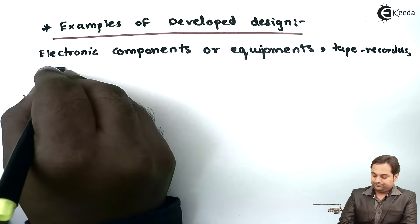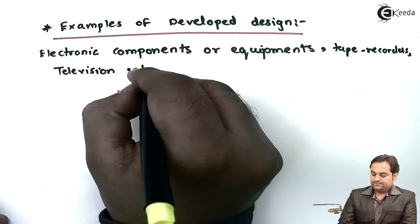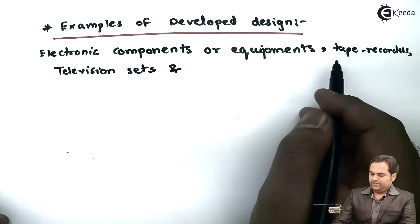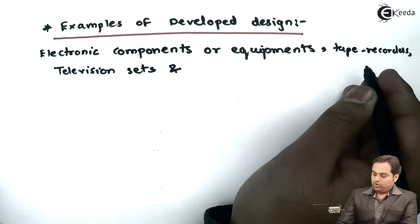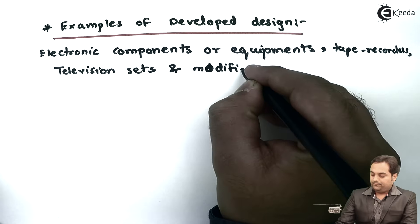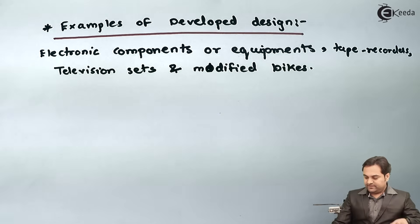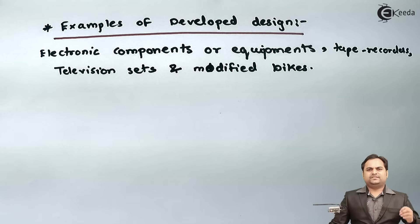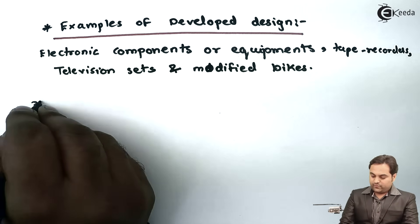Further examples of developed design include tape recorders, television sets, and modified bikes. In all these cases, we are using an existing model just for reference and a complete new product is developed. This is the key characteristic that distinguishes developed design from adaptive design.